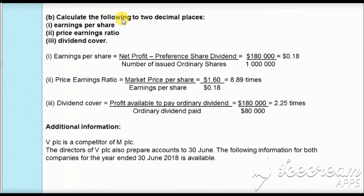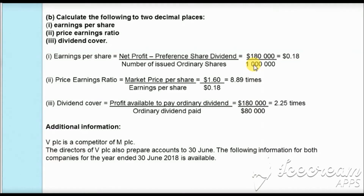In part (b) of the question, we are asked to calculate the following to two decimal places. First, we have earnings per share. The formula is: net profit minus preference share dividend, divided by number of issued ordinary shares. As we don't have preference shares here, preference share dividend is zero. Hence, earnings per share equals $180,000 divided by 1 million shares, giving earnings per share as 18 cents.